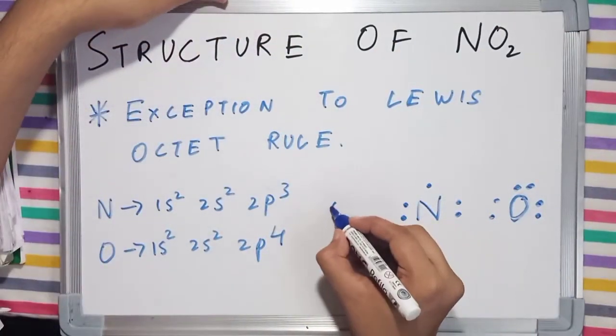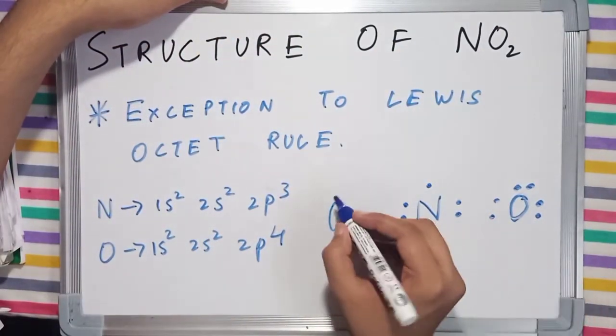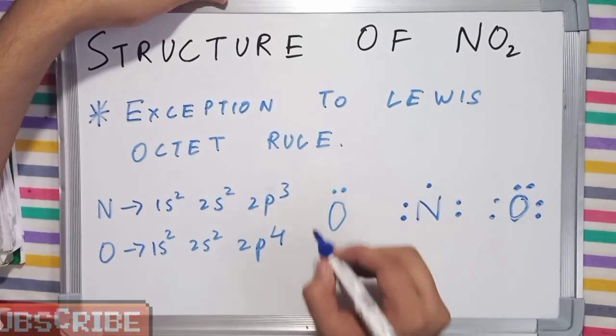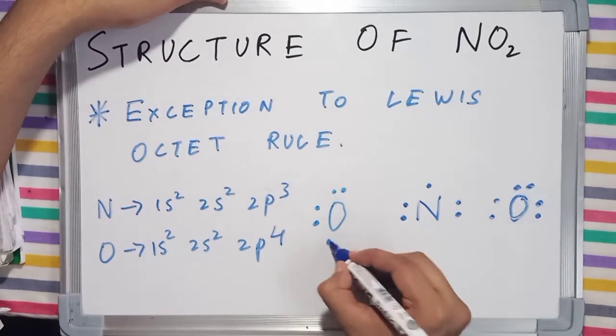The second oxygen atom will also be having 6 valence electrons: 1, 2, 3, 4, 5, 6.